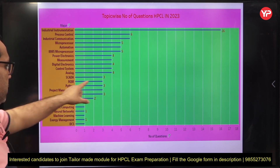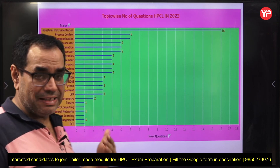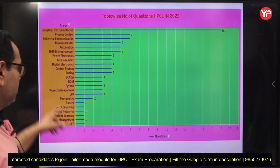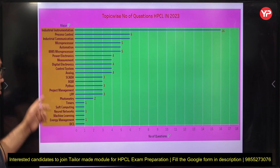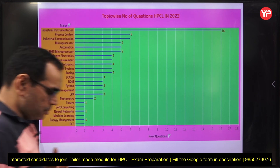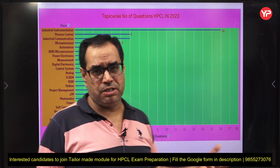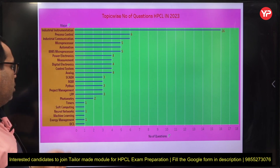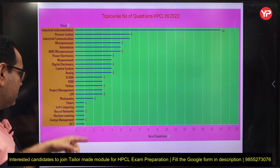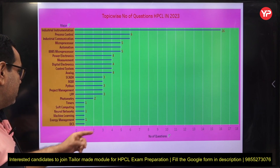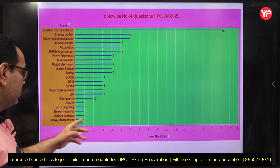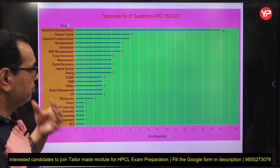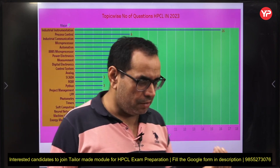Reliability and quality management has 3 questions, Python language has 3 questions with some basic concepts asked. Project management also had 3 questions last year. Then linear programming, photometry, timers, soft computing, neural network, machine learning, energy management, and DCS each have 1 question.